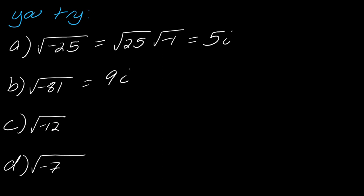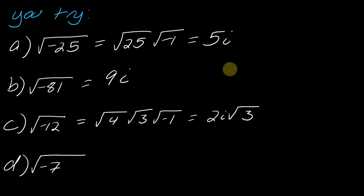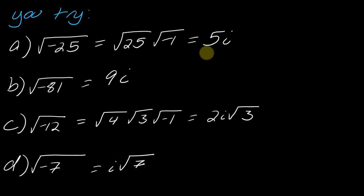For the next one, we're going to have to think about how we simplify square roots in general. I'm going to have the square root of four, the square root of three, and then the square root of negative one — those are all the ways I would break down this particular radical. So we write this as 2i times the square root of three. In general, you want the i to come before the square root to make it clear what your answer is. And for d, this is just going to equal i times the square root of seven — we can't break that down any farther. When you see a square root with a negative, you pull that out and write it as i.